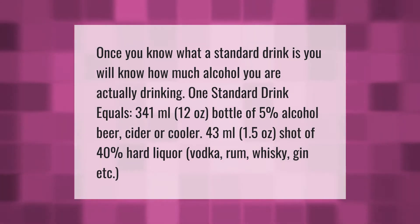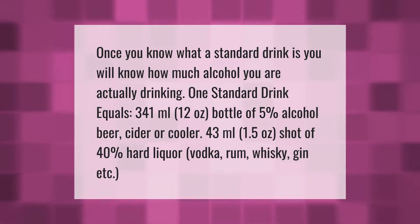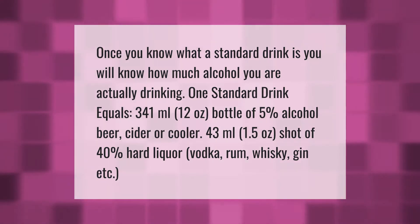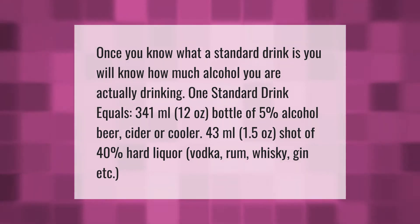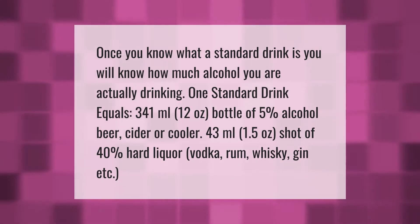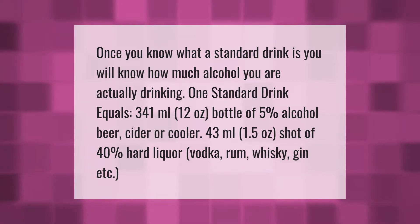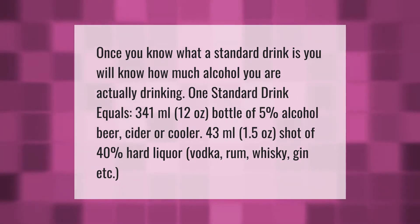Once you know what a standard drink is, you will know how much alcohol you are actually drinking. One standard drink equals 341 milliliters (12 ounces) of 5% alcohol beer, cider, or cooler, or 43 milliliters (1.5 ounces) of 40% hard liquor such as vodka, rum, whiskey, or gin.